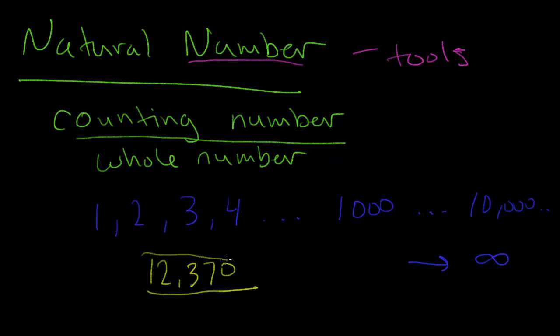So having a number like this, a counting number or a natural number, would allow you to keep track of that. And yeah, that's the basic purpose of this. So the natural numbers were designed to be able to count things. And yeah, that's basically it.